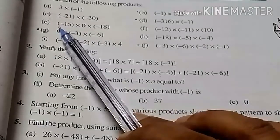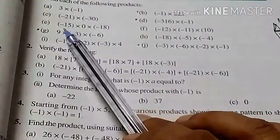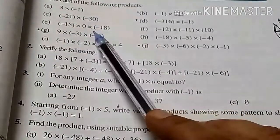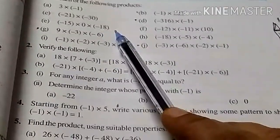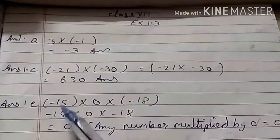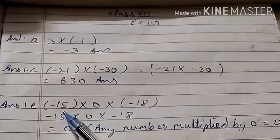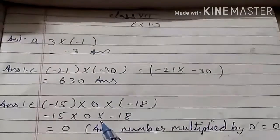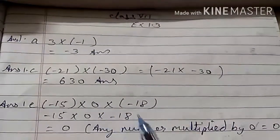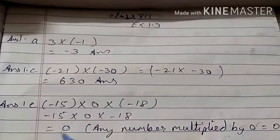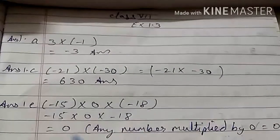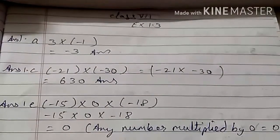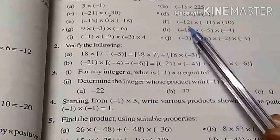Question number 1E: minus 15 multiply 0 multiply minus 18. We see that one integer is minus 15 and it is multiplied by 0, then by minus 18. The result will be 0, because any number multiplied by 0 will get 0.